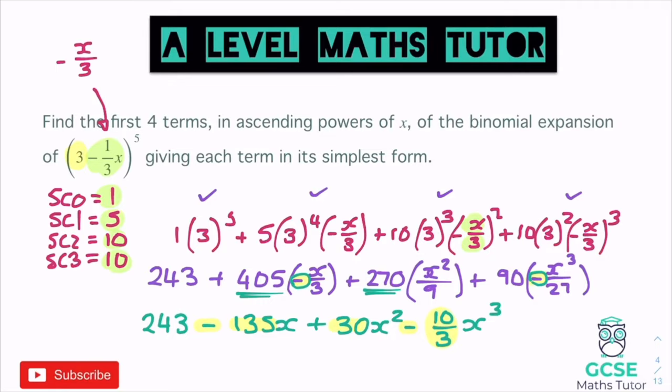This question says: find the first three terms in ascending powers of x of the binomial expansion of (1 + px)^10, where p is a non-zero constant, giving each term in its simplest form. Then given that the coefficient of x² is nine times the coefficient of x, find the value of p. Hence write down the coefficient of x².